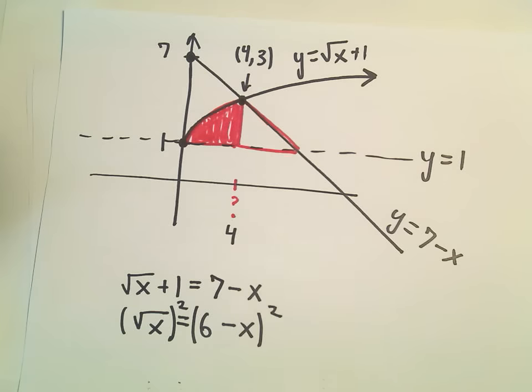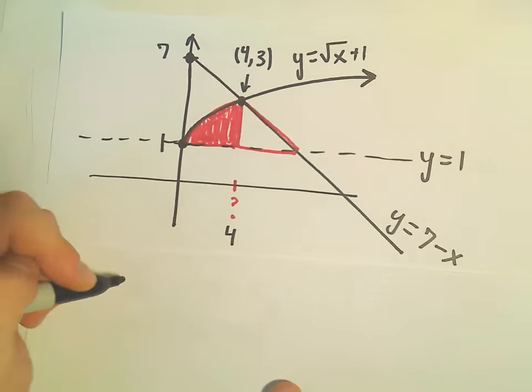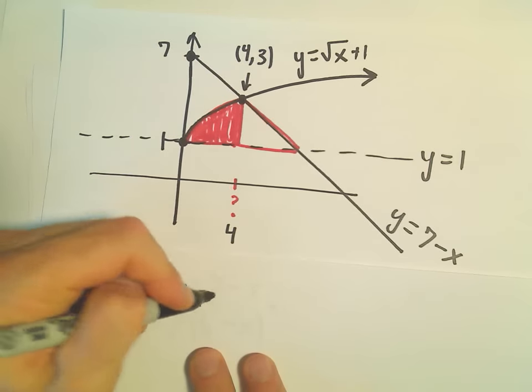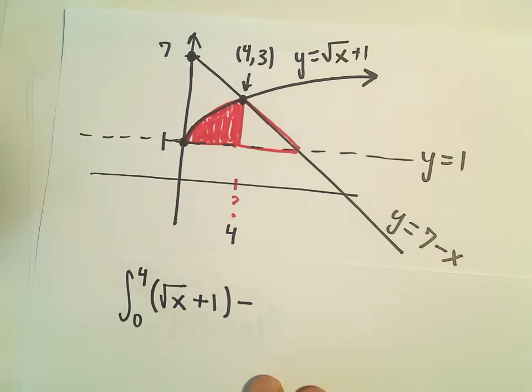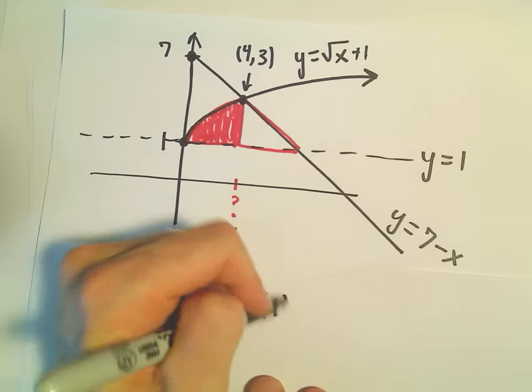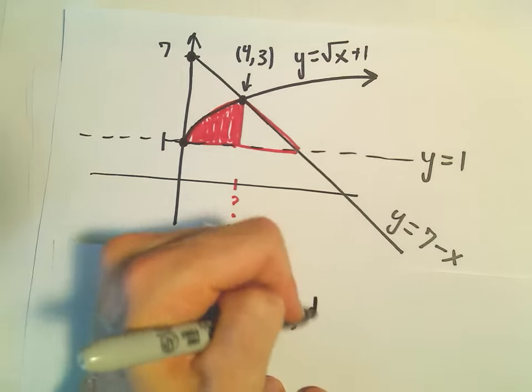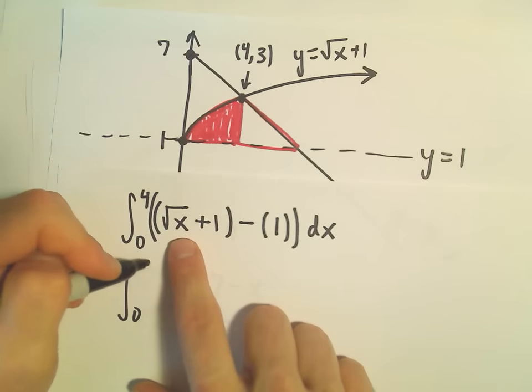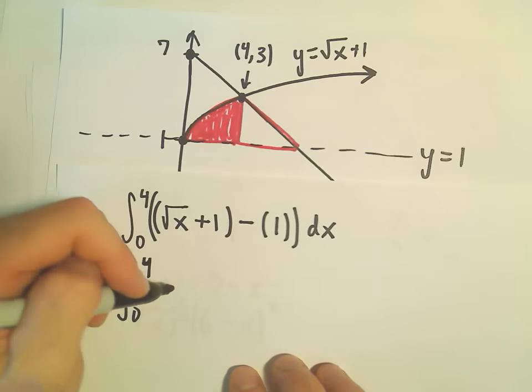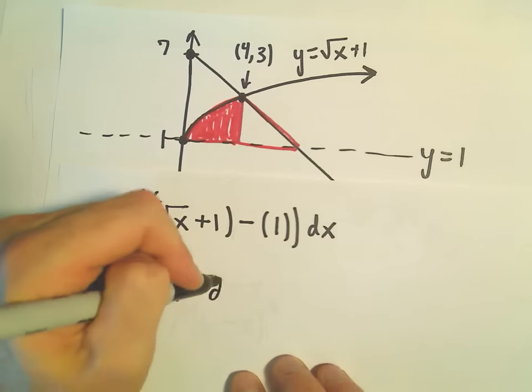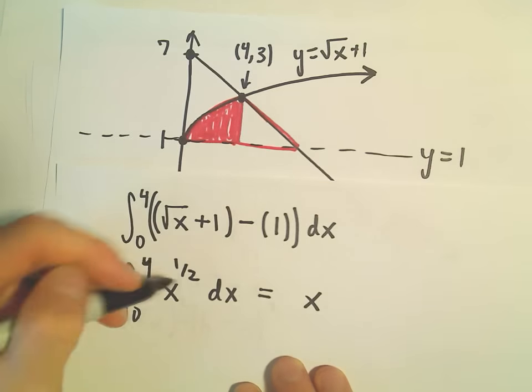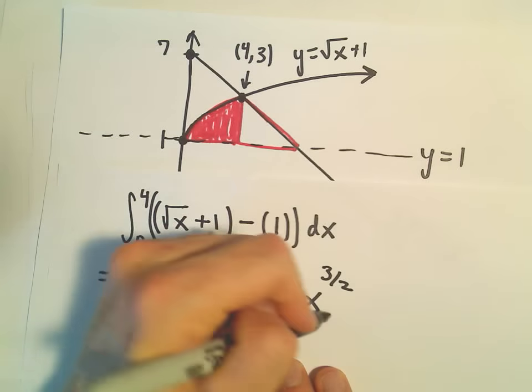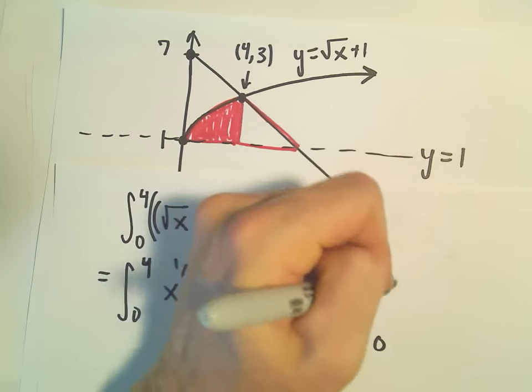So to set this integral up, the first part, we'll just go from x equals 0 to 4. The top function is the square root of x plus 1, and then we'll subtract away the bottom function, which is y equals 1. So all of that with respect to x. We're just integrating the square root of x since the positive 1 and negative 1 will cancel out. That's x to the 1 half dx. If we integrate, we'll add 1 to get 3 over 2, and then we'll divide by 3 over 2, which is the same as multiplying by 2 over 3.